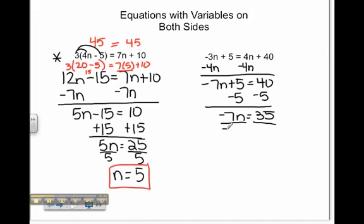We will then divide both sides by negative 7, leaving us with a solution of n equals negative 5. Let's check our work.